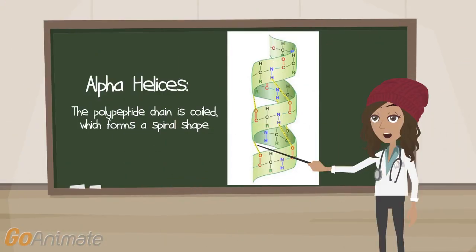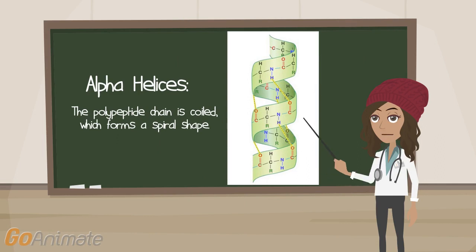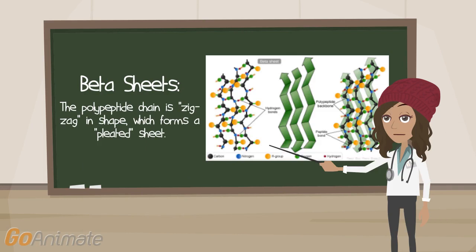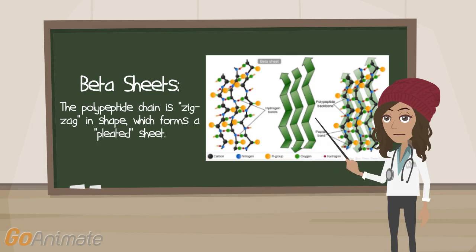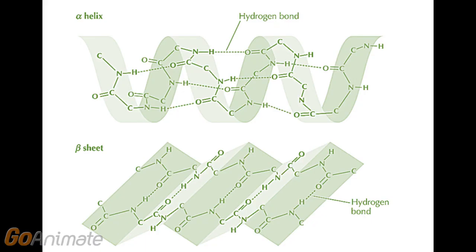This brings us to secondary protein structures. The first shape that can form is an alpha helix, where the polypeptide chain is coiled into a spiral shape. The second shape is a beta sheet, where the polypeptide chain forms a zigzag, producing a pleated shape. These two shapes are caused by interactions between oxygen and hydrogen atoms, which allow the polypeptide backbone to bend and twist. The abundance of hydrogen bonds gives the protein a strong structure, enabling it to keep its shape without breaking apart.